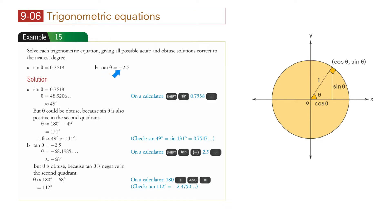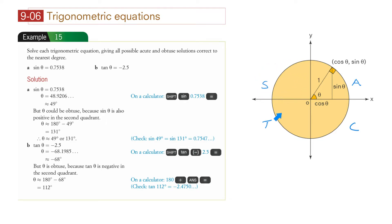Part B: tan theta equals minus 2.5. Going back to the unit circle — all sine, cosine, and tan are positive in quadrant 1. Sine is positive in quadrant 2; cosine and tan are negative there. Tan is positive in quadrant 3; sine and cosine are negative. Cosine is positive in quadrant 4; sine and tan are negative.